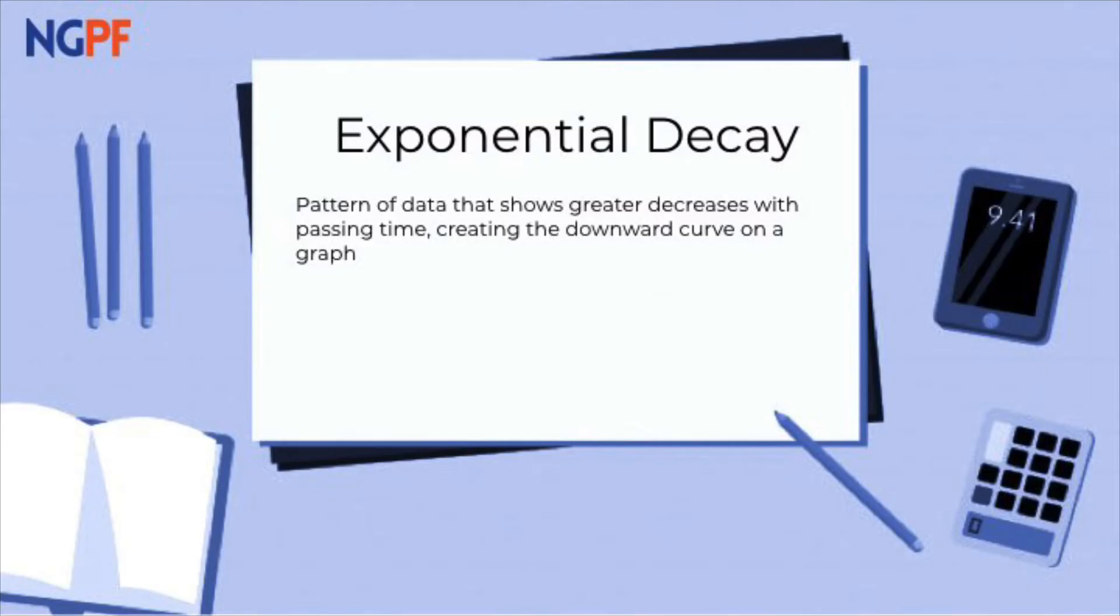The formula for exponential decay is similar to exponential growth, but instead of a growth factor, we will use a decay factor. We have y equals a times b to the x power, where y is the total, a is the initial amount, b tells us the rate at which something is decaying, and the exponent of x tells us how many years.